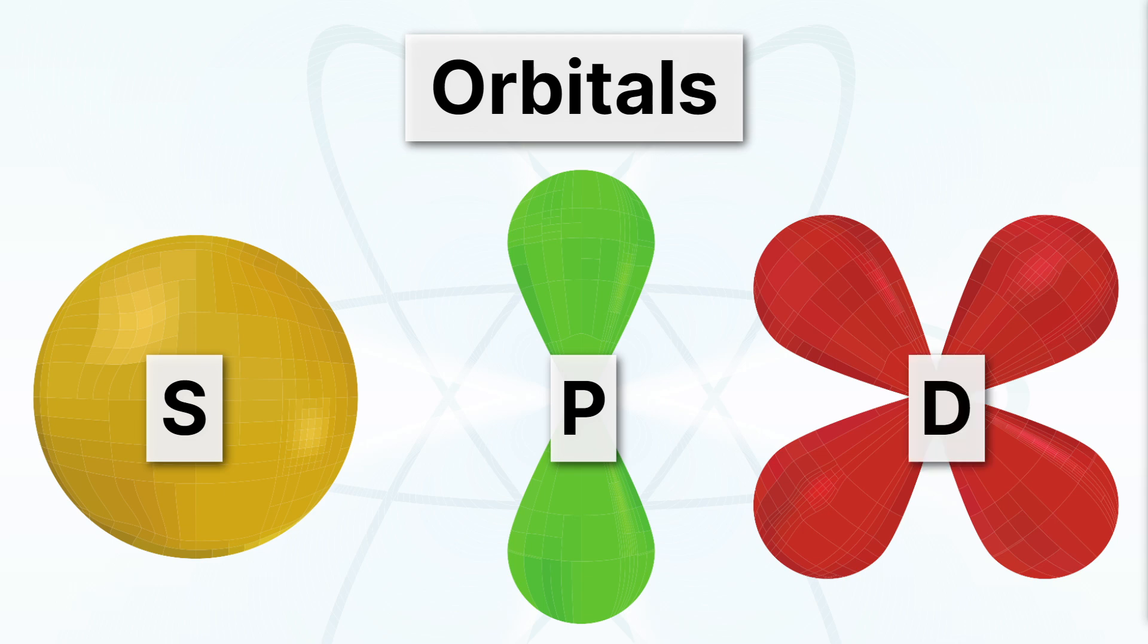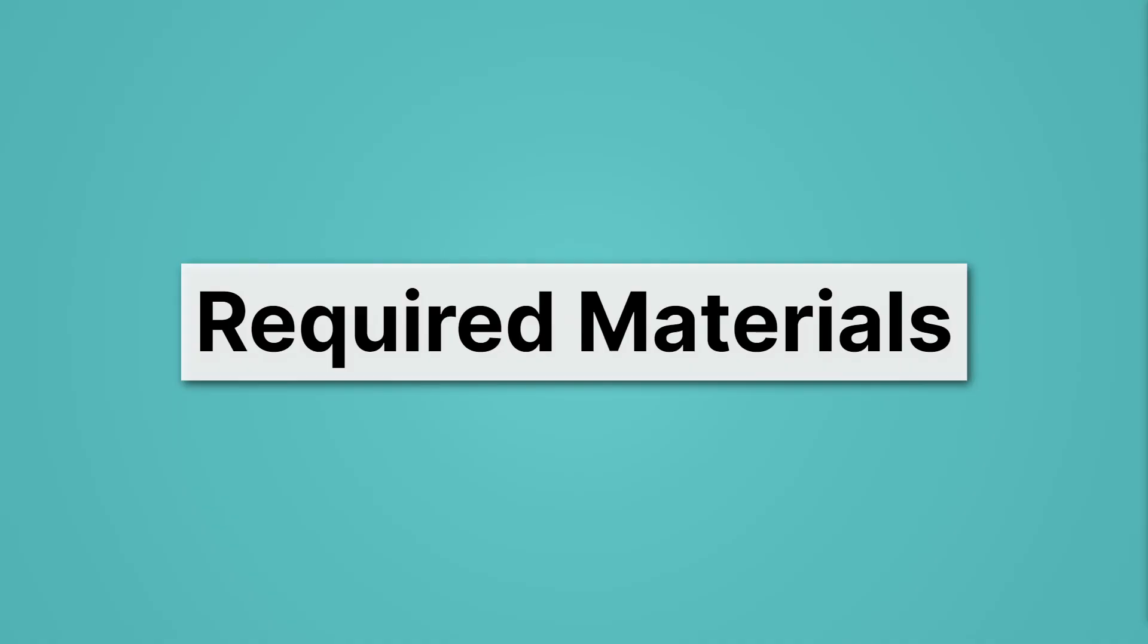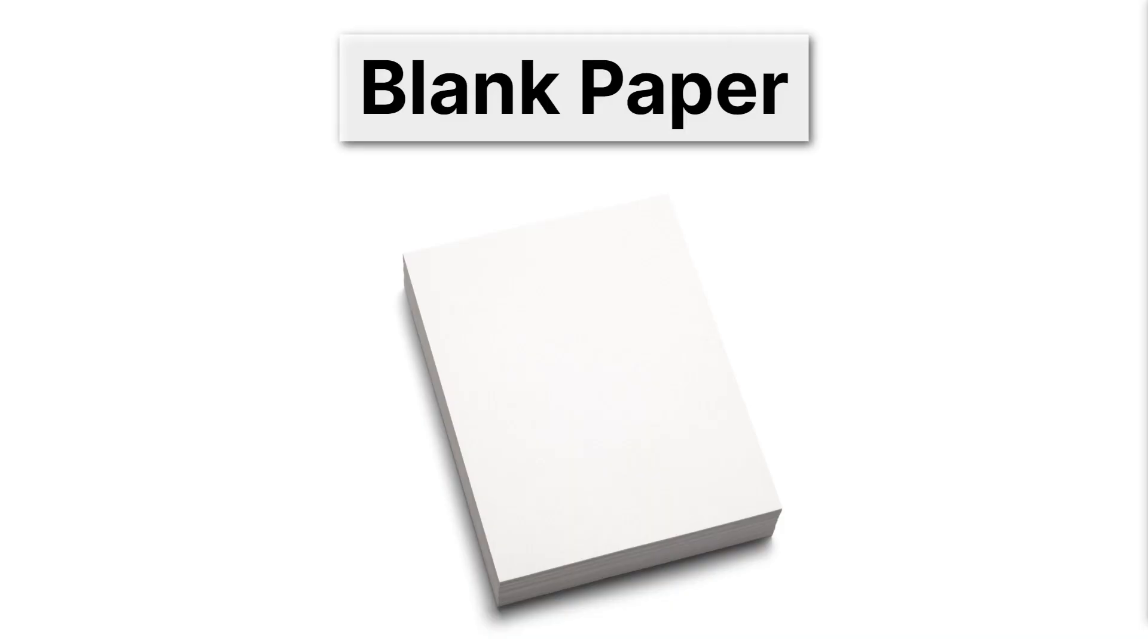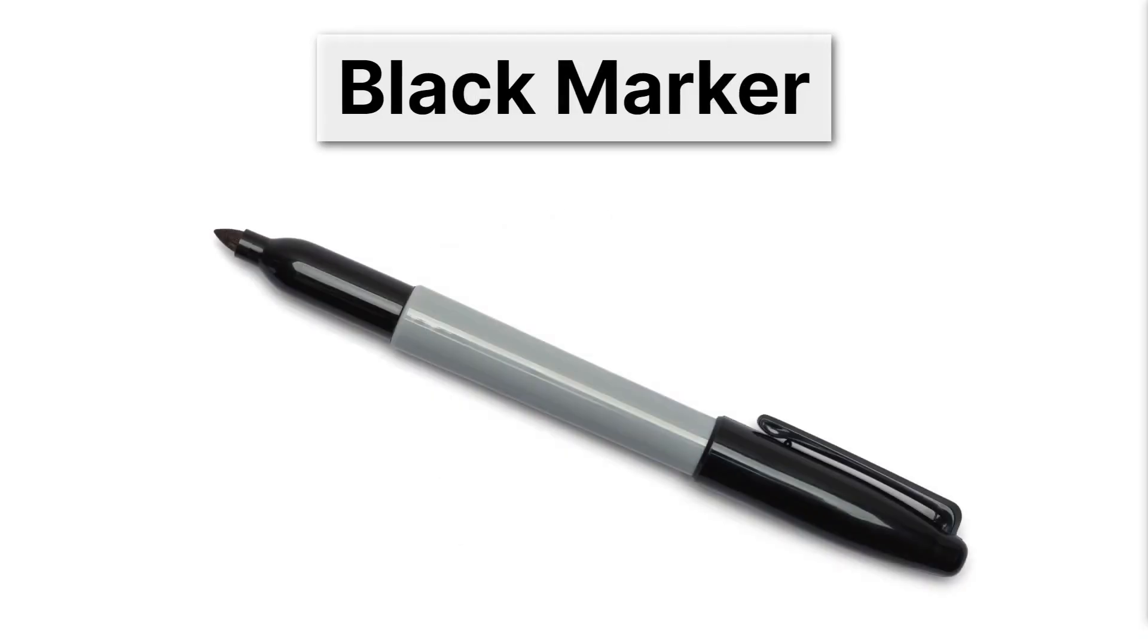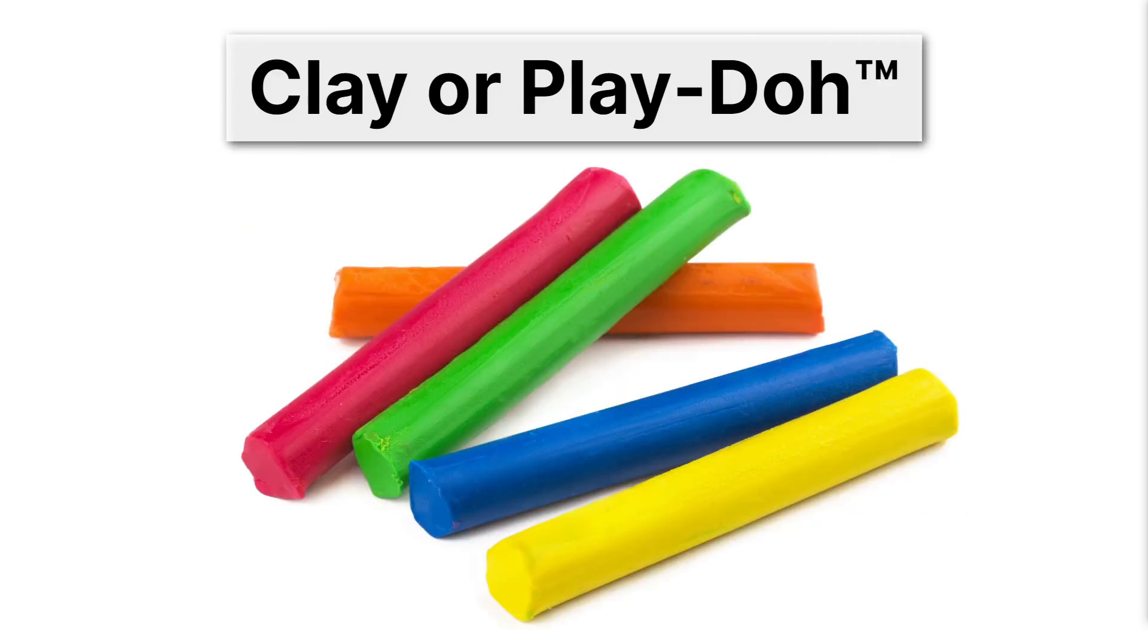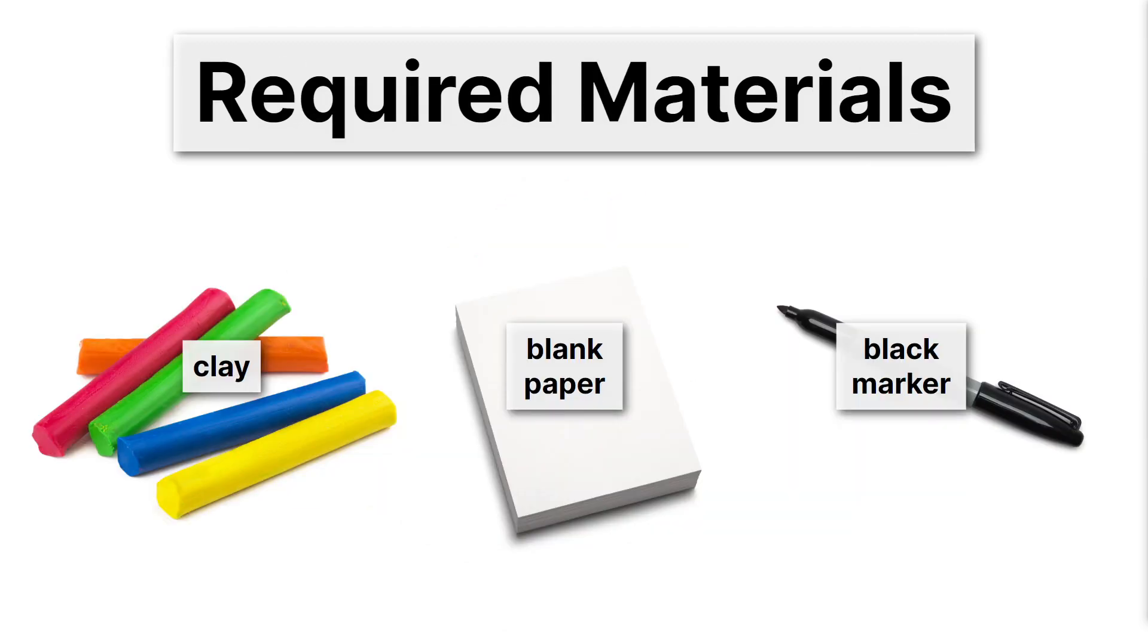Well now that we've reviewed the models of the atom, let's take a look at our required materials. You're not going to need too much for this lab. You're going to need blank paper, and that's basically just a surface that you'll build your models of the atom on. You're going to label the models of the atom with a black marker, and you'll need clay or play-doh so that you can actually build them.